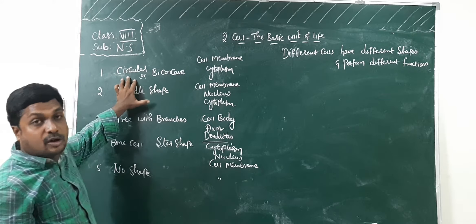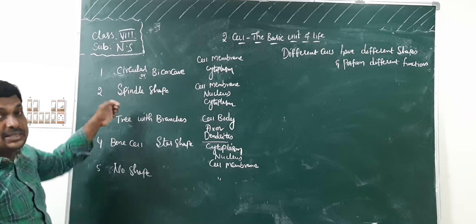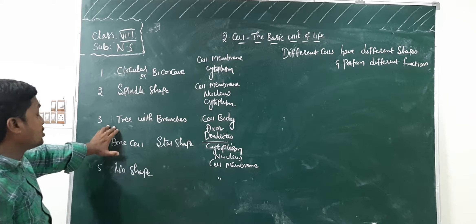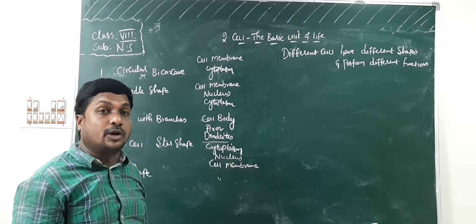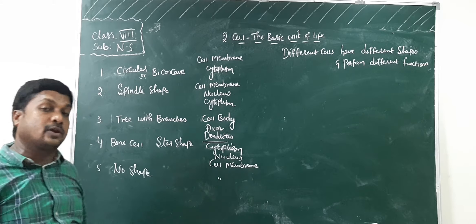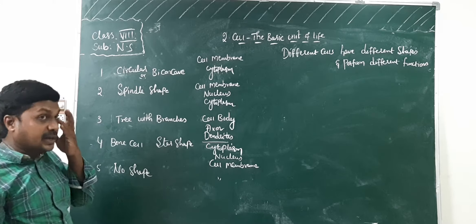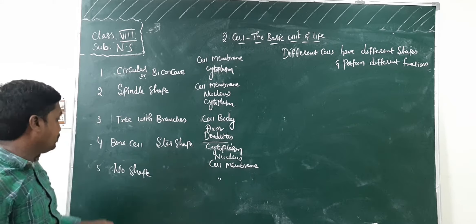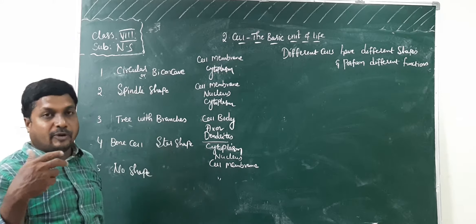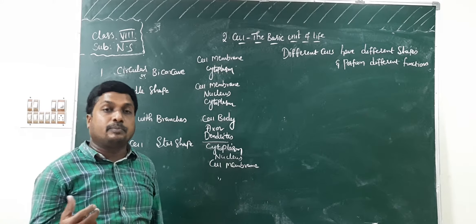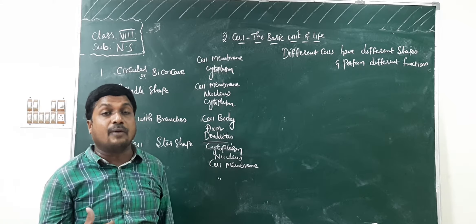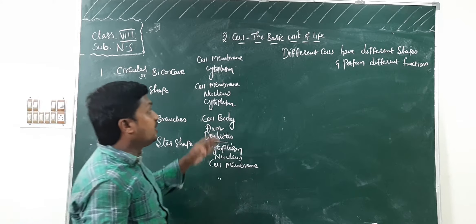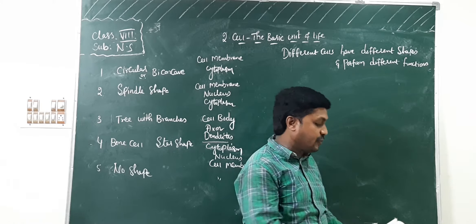Red blood cells carry oxygen and CO2. Muscle cells are helpful for movement of body parts, whether internal or external. Nerve cells carry messages from sense organs to brain or spinal cord, and from spinal cord and brain back to sense organs. Bone cells present in bones give framework to the body. White blood cells, which have no particular shape, help to kill harmful germs that enter the body. Based on this, we conclude that different cells have different shapes and perform different functions.